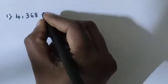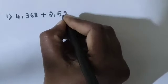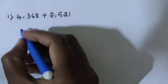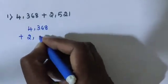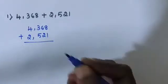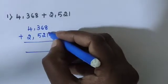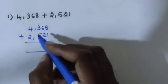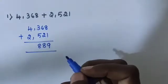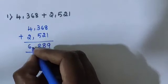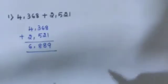Question number 1: 4368 is added by 2521. 8 plus 1 equals 9. 6 plus 2 equals 8. 3 plus 5 equals 8. 4 plus 2 equals 6. The total answer is 6889.